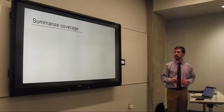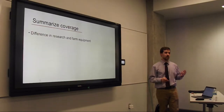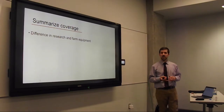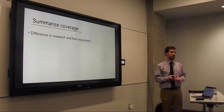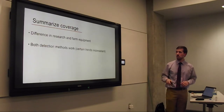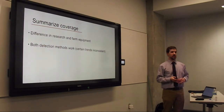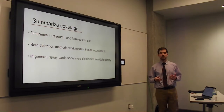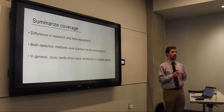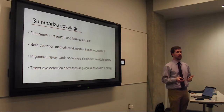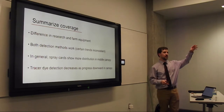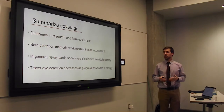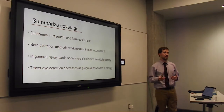To summarize coverage, there's a difference when looking at research versus farm equipment beyond just size — they travel at different speeds and have different pump types, which affects pressure. Trends are a little inconsistent. With spray cards, you see more distribution in the middle canopy, whereas with the dye method, you see a higher value in the upper canopy that decreases as you move down. There's still work to do to figure out which detection method is best, as the spray card method takes more time and labor while the dye method is relatively quick.